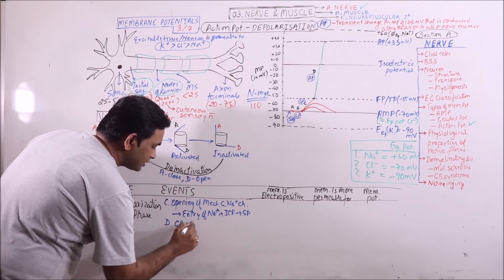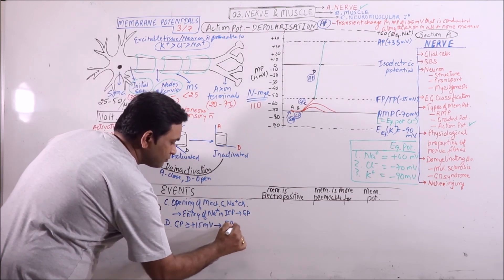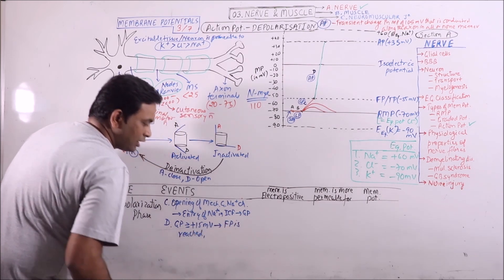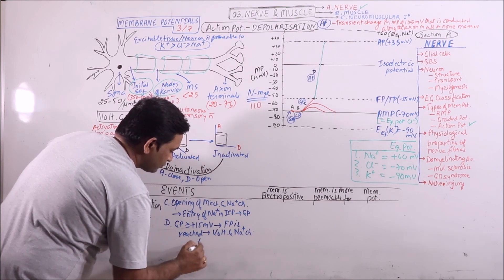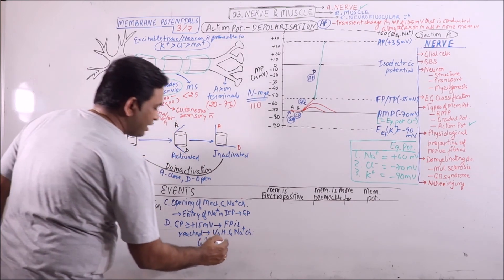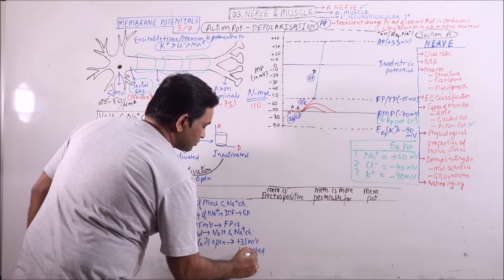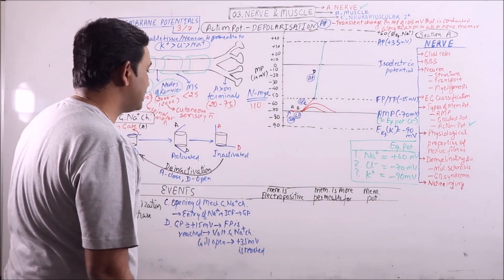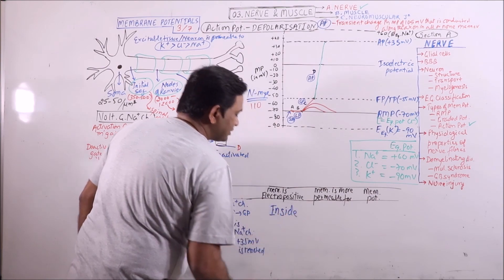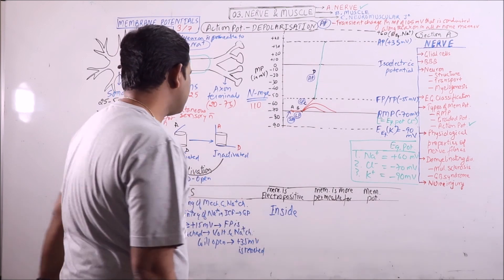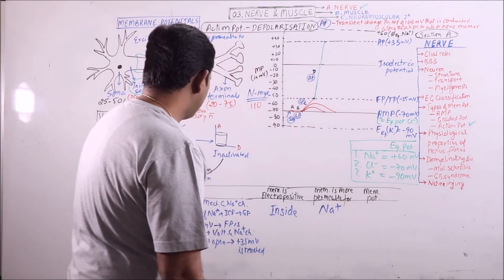D: if the graded potential is greater than or equal to plus 15 millivolts, then it will reach the firing potential. Once the firing potential is reached, voltage-gated sodium channels will open, and finally plus 35 millivolts is reached. The membrane becomes electropositive inside because sodium — cations — are entering the cell.